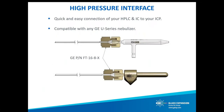The last nebulizer accessory we'd like to present is our high pressure interface kit, which is compatible with any Glass Expansion DC nebulizer model. This interface allows for an easy and reliable connection of your HPLC or ion chromatography system directly to your Glass Expansion DC nebulizer. Leaky connections to your nebulizer will affect both back pressure and the stability of nebulization efficiency, which has detrimental effects on nebulizer performance. Our high pressure interface provides a more secure connection to help prevent these leaks. And that concludes our webinar.